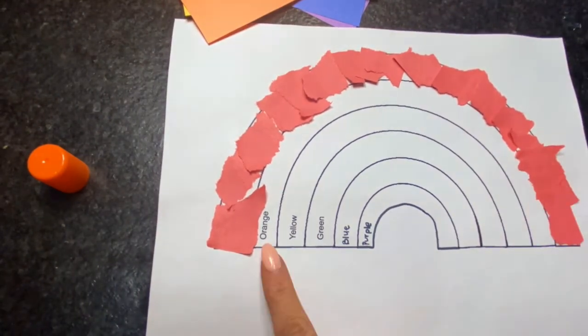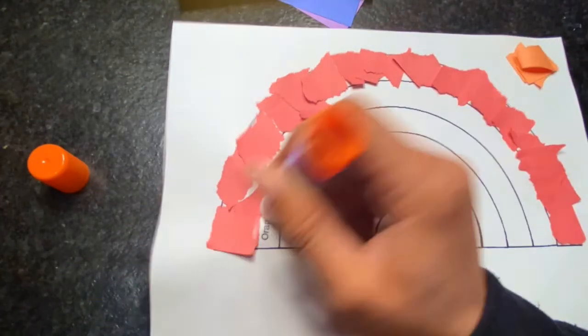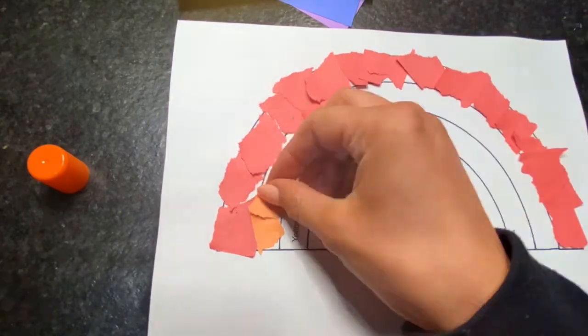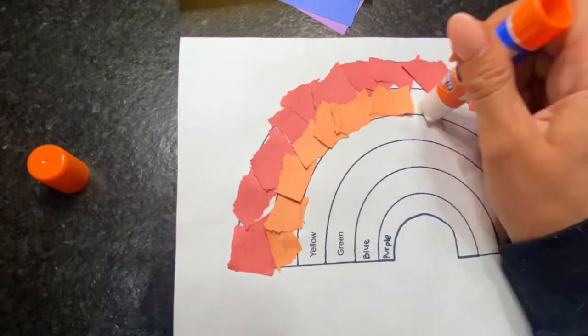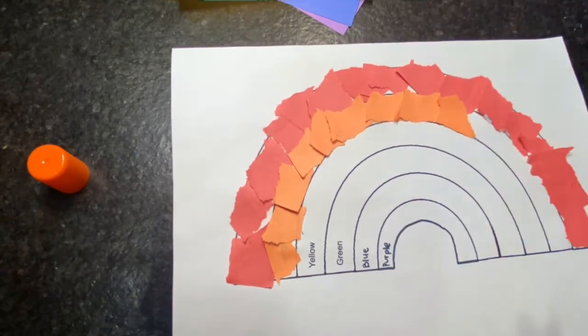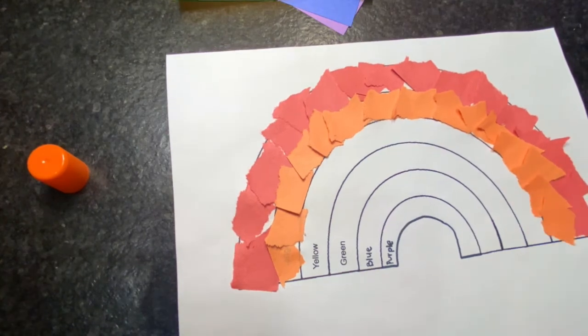Wow, that looks great. Now it's time for orange. We're going to rip the orange paper into little pieces, and then again we're going to glue in little dots around the arch until it's all filled in. Now let's do the rest of the colors.